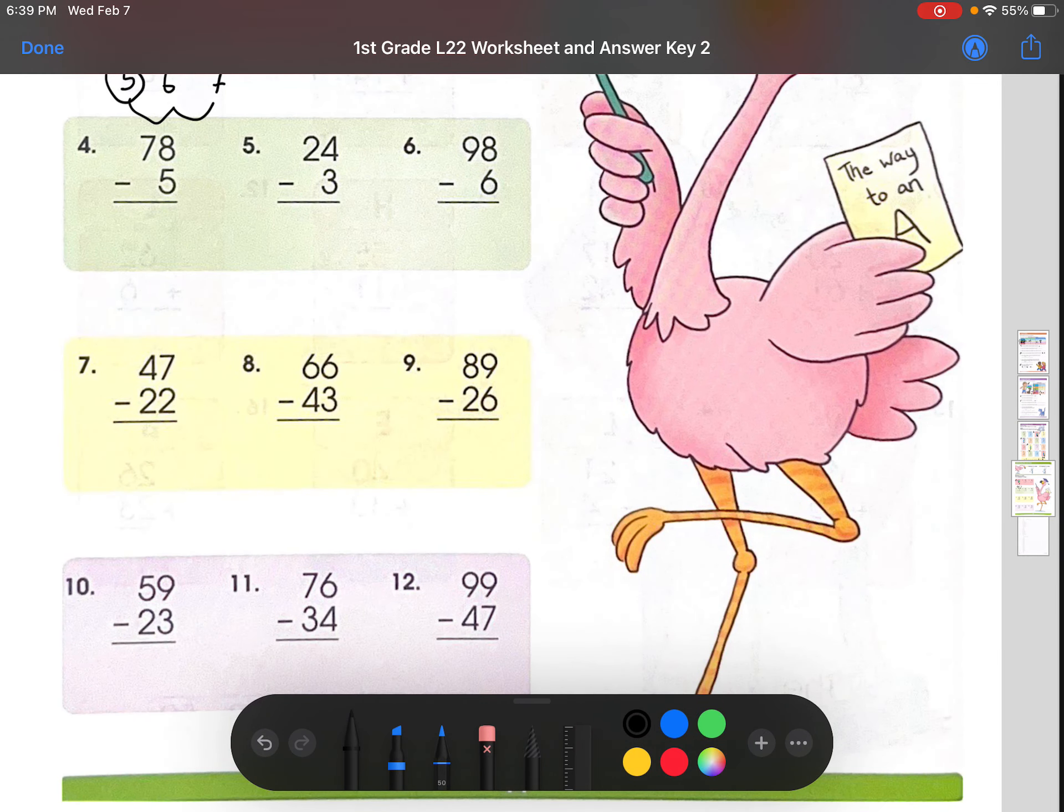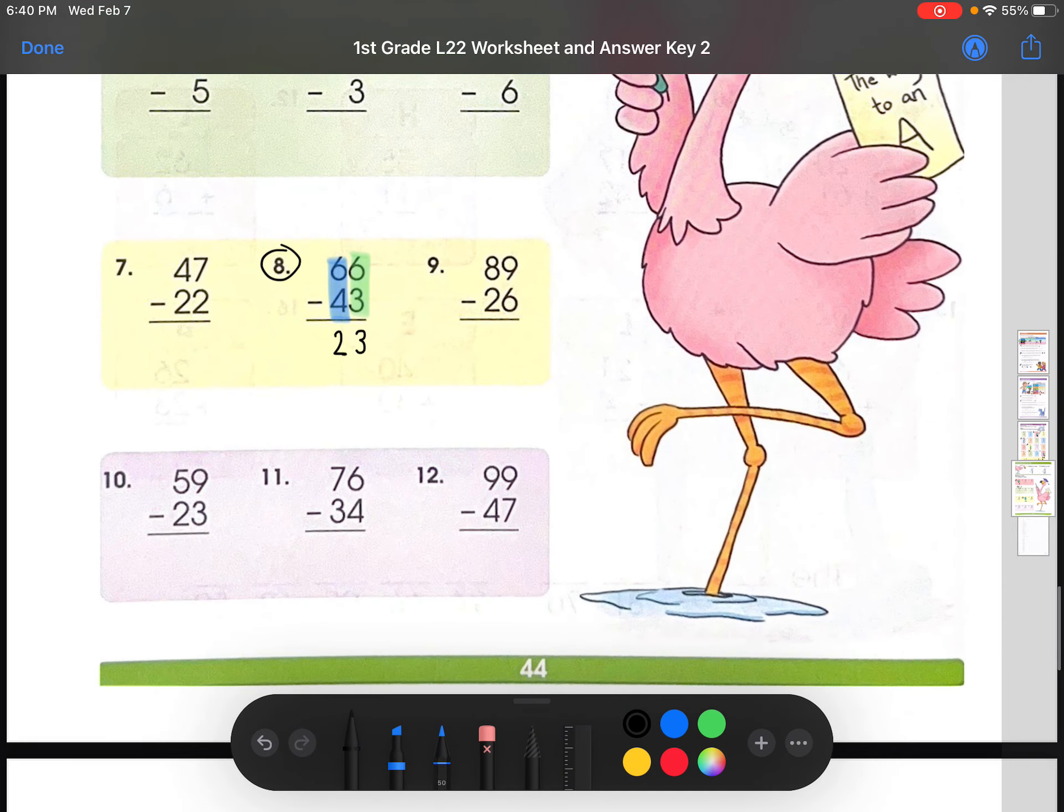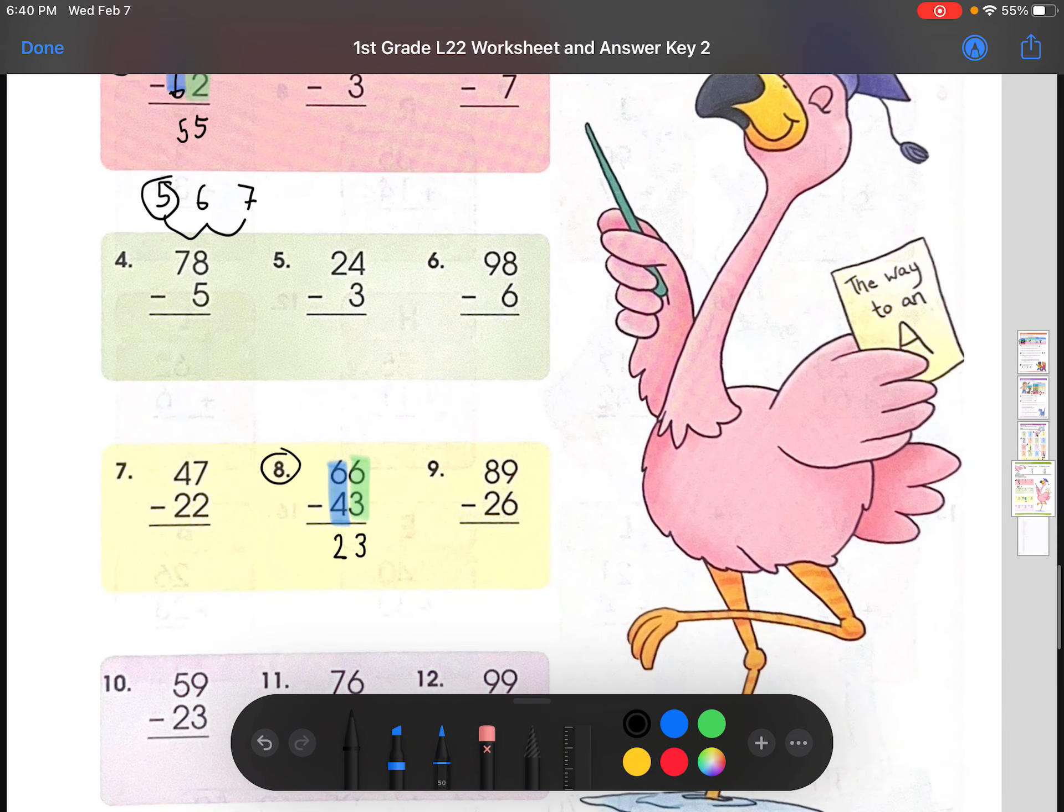Let's do one with a bigger number. Let's do number 8. 66 minus 43. So first, we would focus on the 1s place. 6 minus 3 is 3. And then we would focus on the 10s place, which is 6 minus 4 is 2. That would be the answer. And yeah, that will be the end of this lesson. Thank you so much.